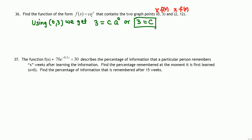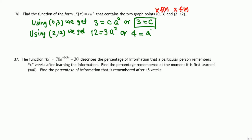C is found. Now we need to find the value of a using the second point (2, 12). Plugging in, f(x) = 12 equals c — which is 3 — times a raised to x, where x is 2. So we have 12 equals 3·a².